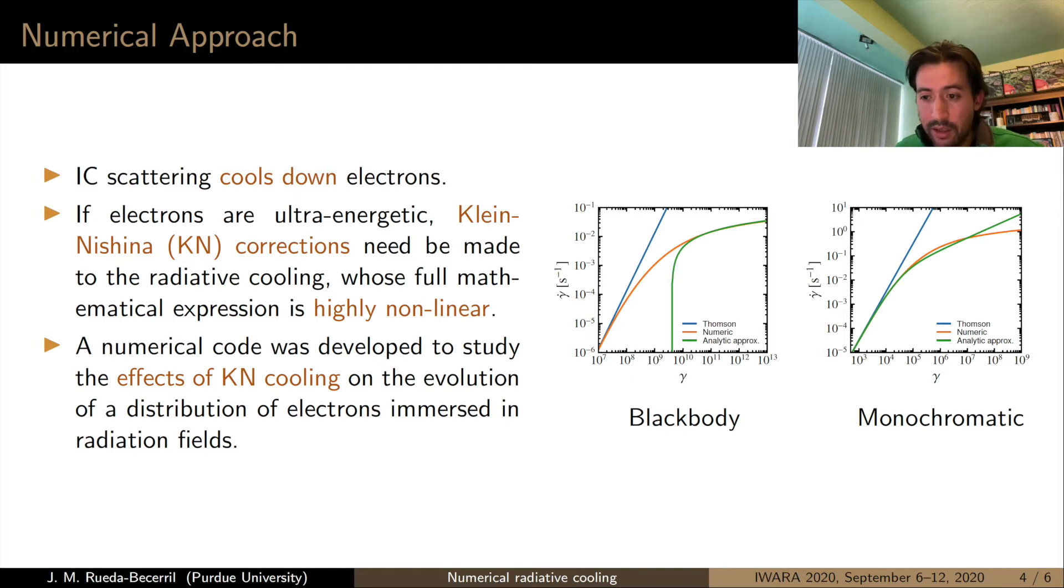As a way of testing and comparing, the numeric approach with some analytical approximations for two different radiation fields, black body and monochromatic. In the blue line we can see the Thomson regime, in the green line we can see the analytic, and in the orange we can see the numerical approach. So we can see that the orange line transitions from the Thomson to the Klein-Nishina and even to the deep Klein-Nishina regimes.